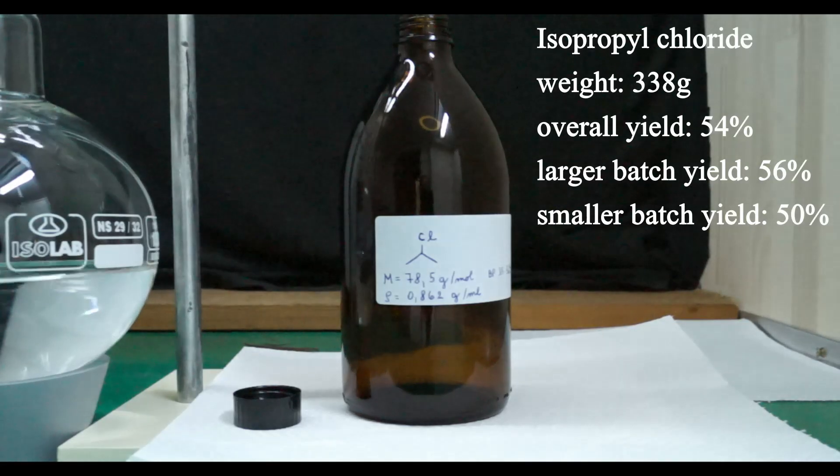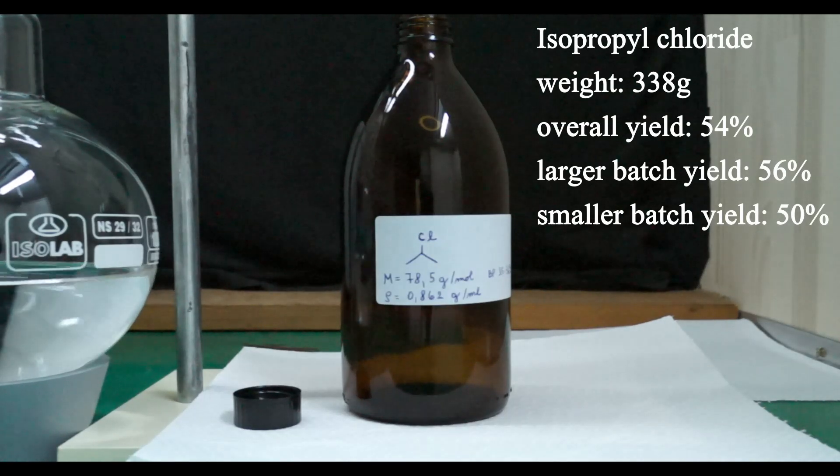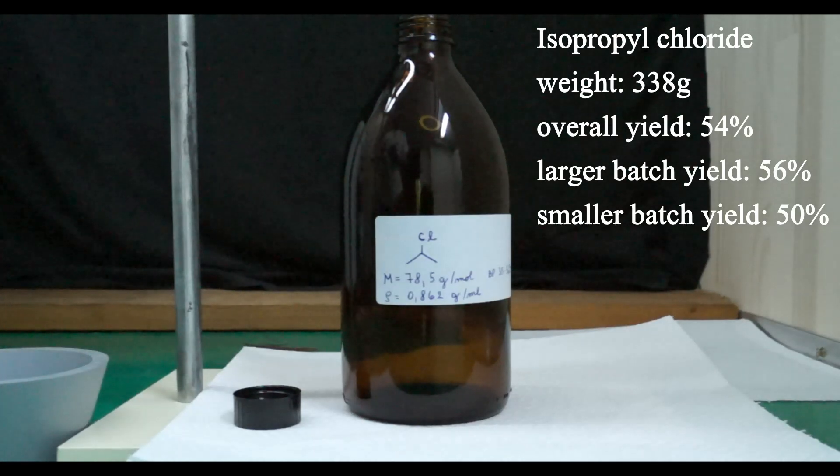The collected product is poured into a pre-weighed 500 milliliter amber glass storage bottle. The isopropyl chloride that I collected weighed 338 grams. This represents an overall yield of 54 percent based on the starting isopropyl alcohol.